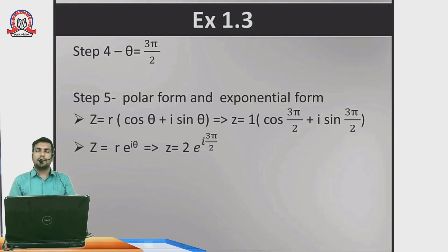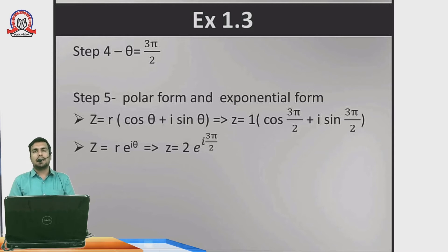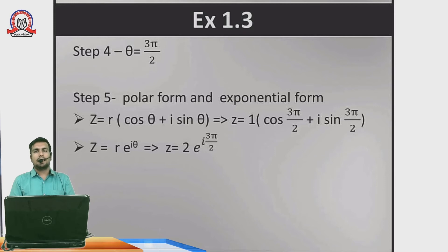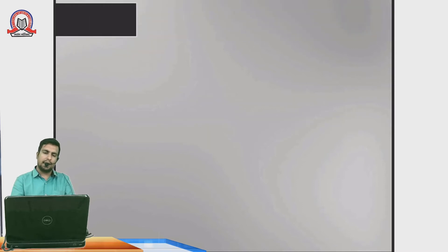Now we reverse the process: converting from polar form back to Cartesian form (x + iy). In polar form you are given r and θ; you need to recover x and y. Let's see how that is done.